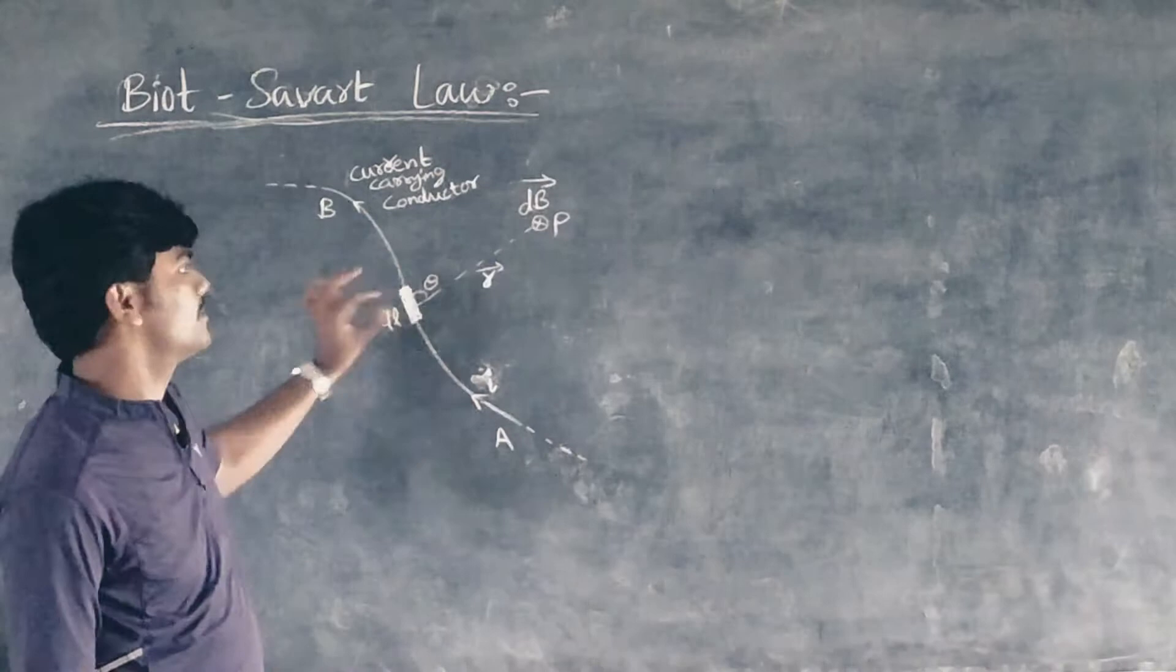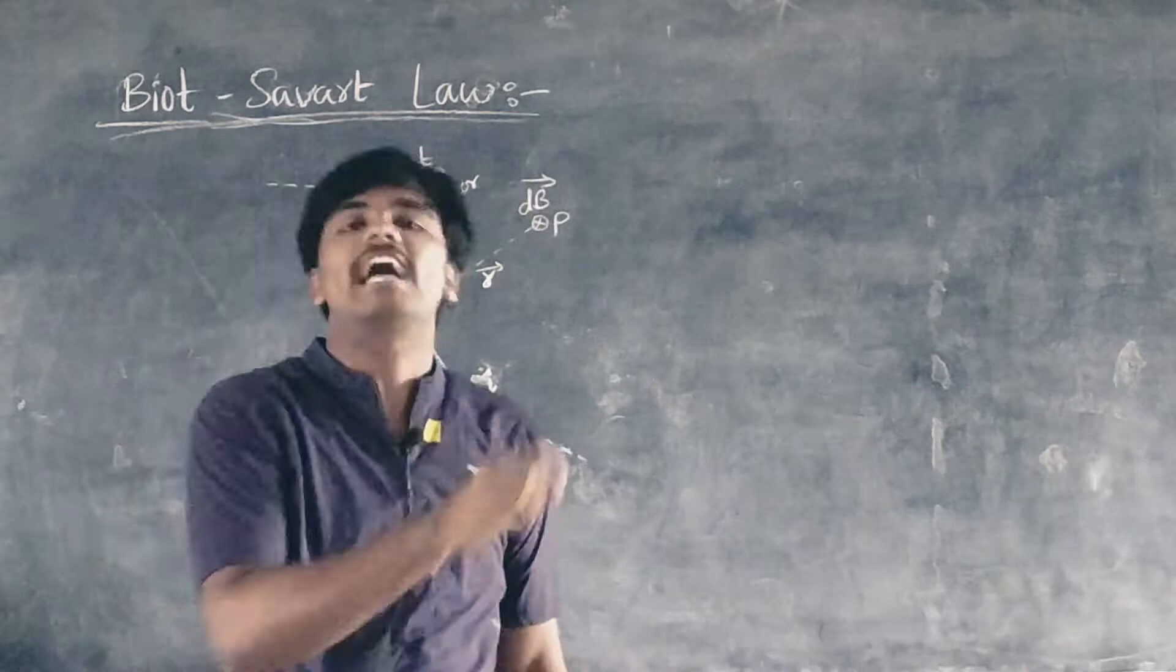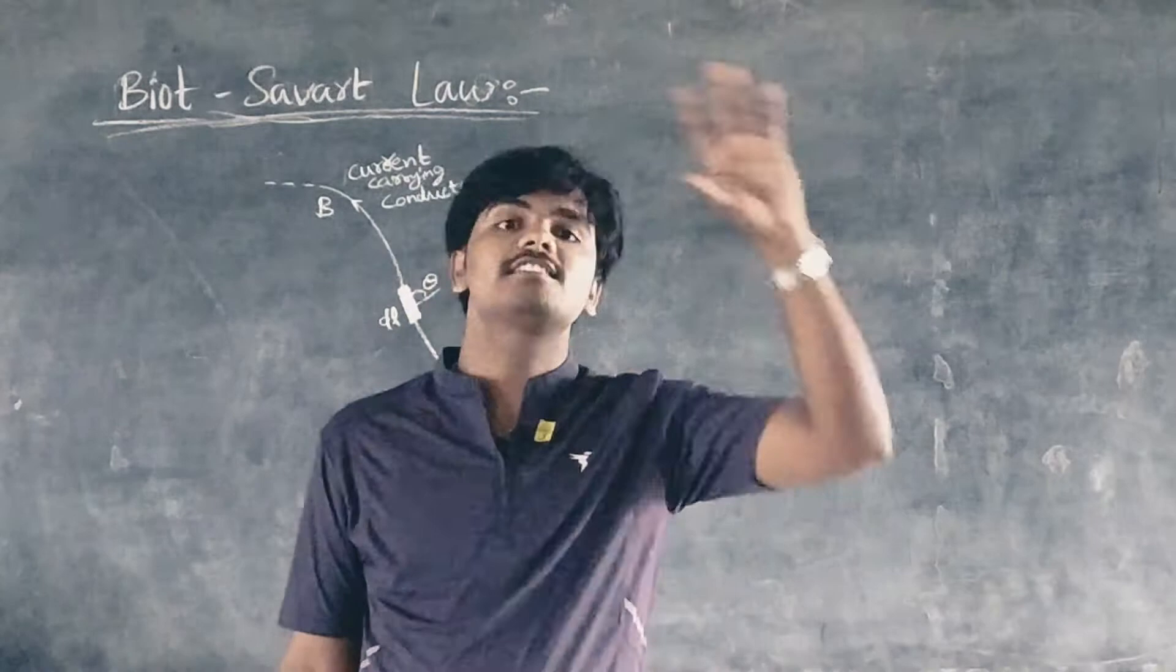The field distribution dB at that point due to each element is calculated. The total field B is then the resultant of the infinitesimal fields of all the elements of the conductor.